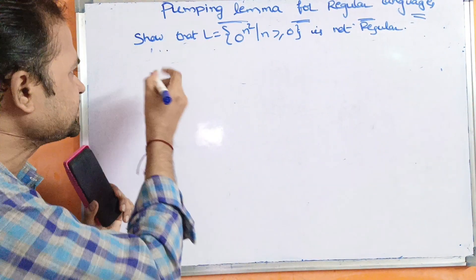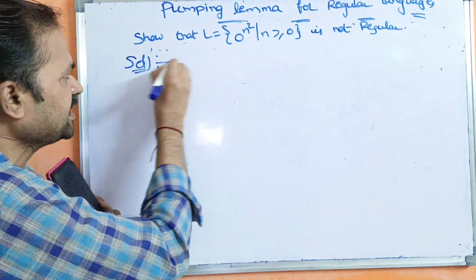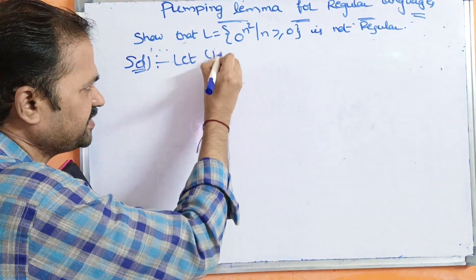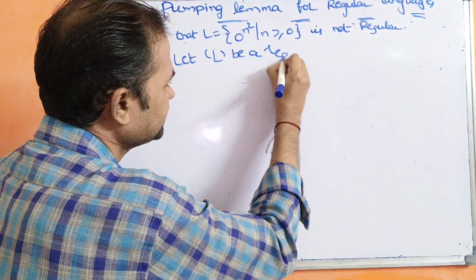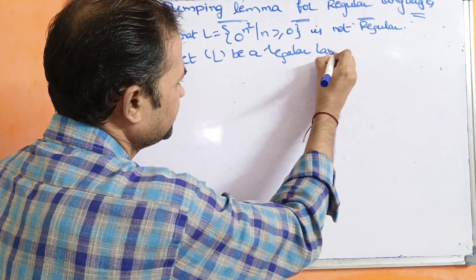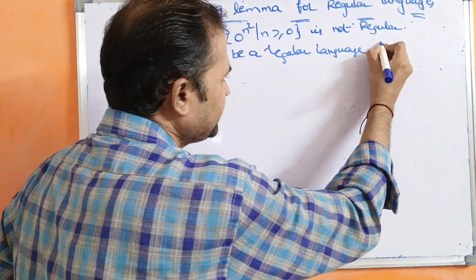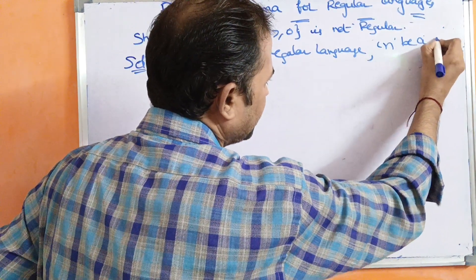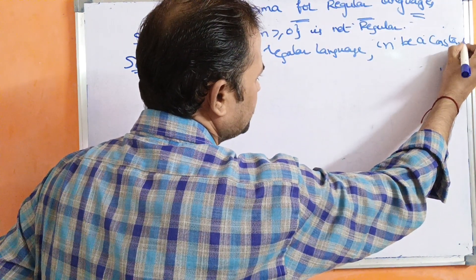Let us see the solution. Initially, assume this language is a regular language — let L be a regular language. And let us take a value called N, where N means a positive integer constant.